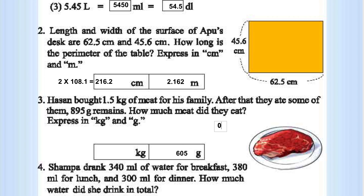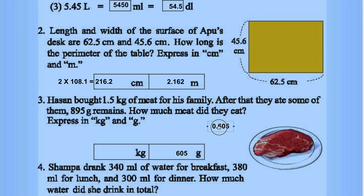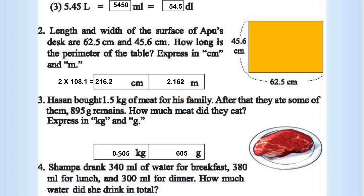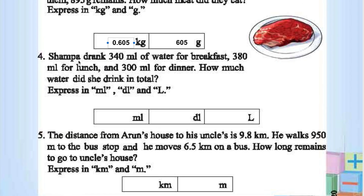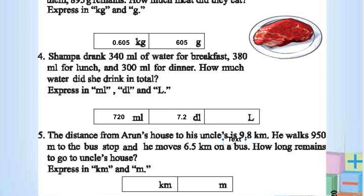In kg, 595 grams will be 0.605 kg. Rank drank 340 ml of water for breakfast, 300 ml per lunch, 300 ml per dinner. How much water did she drink in total? 340 + 300 = 640, 640 + 300 = 940, 940 + 80 = 1020, total is 1060 ml. In deciliters it is 1.060 deciliters, or 0.72 deciliters.